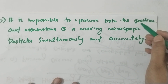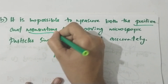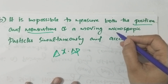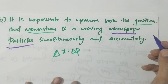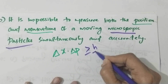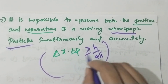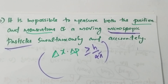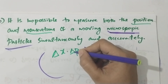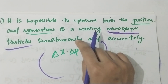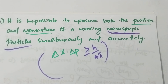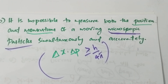The Heisenberg Uncertainty Principle states that it is impossible to simultaneously measure both the position and momentum of a microscopic particle. Mathematically, delta X times delta P is greater than or equal to h divided by 4 pi, where delta X is uncertainty in position and delta P is uncertainty in momentum.